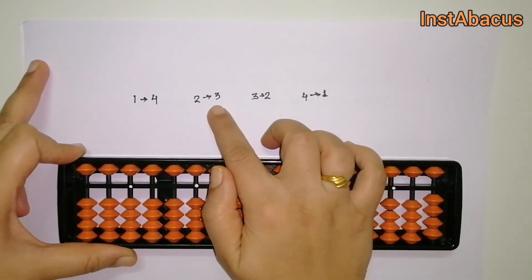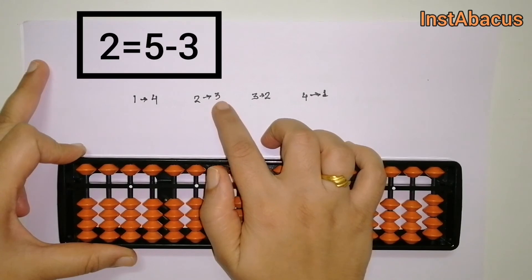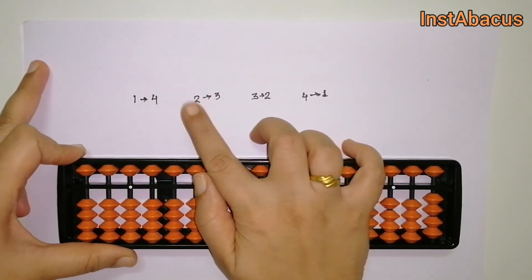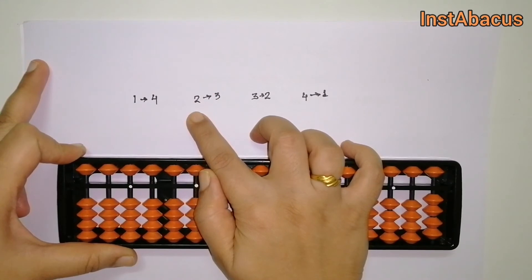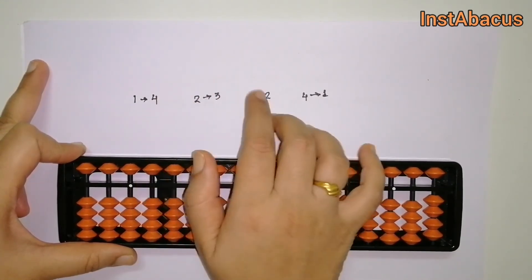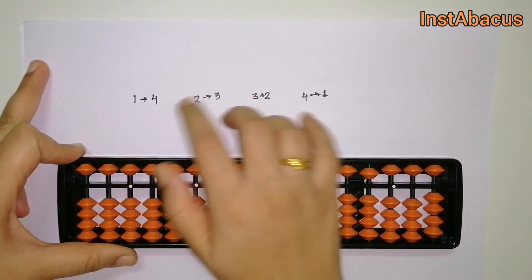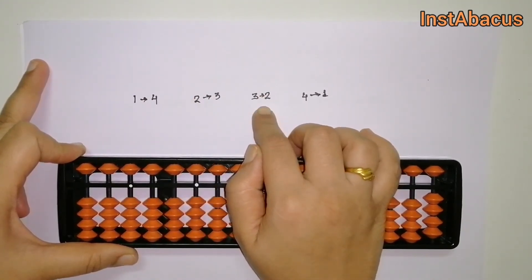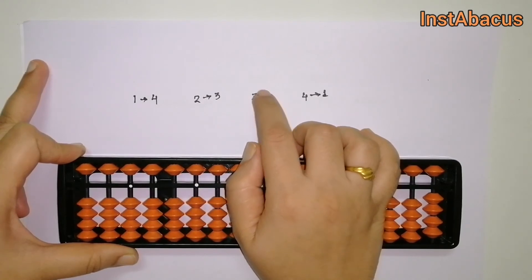If you need to use the small friend of two, we are going to use three in the form of five minus three, because five minus three is also equal to two. That's the same for the other two. For example, if you are going to add three and you don't have enough beads, we are going to use the small friend of three, that's two, in the form of five minus two.